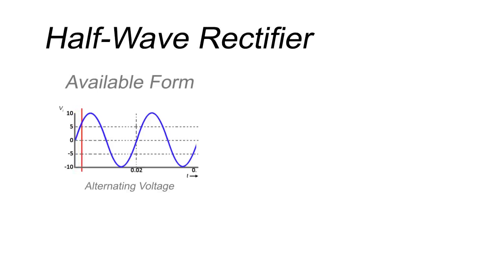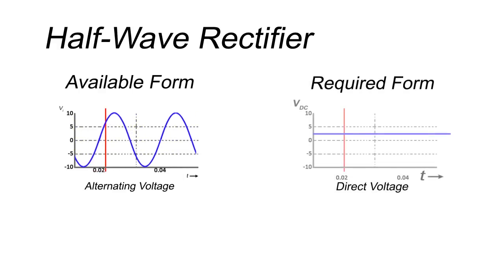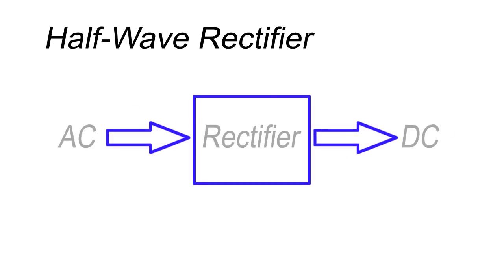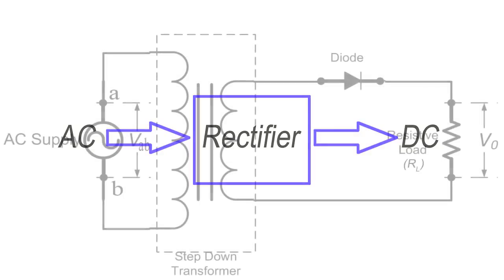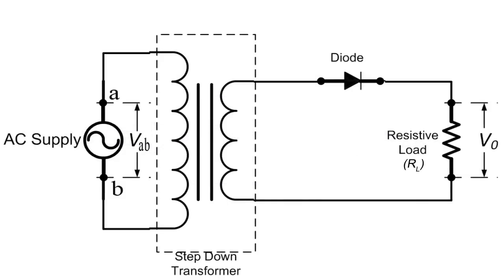Half Wave Rectifier: When available electrical supply is in alternating form and required form is DC supply, conversion is required to be done, which is known as AC to DC conversion or rectification. The circuit used for this conversion purpose is known as rectifier. One type of rectifier is known as half wave rectifier.